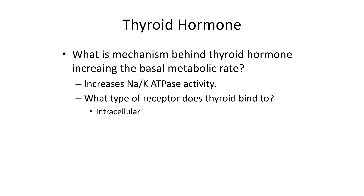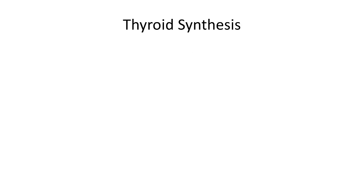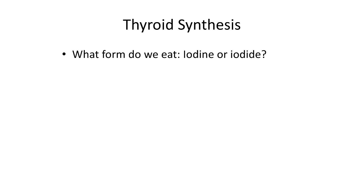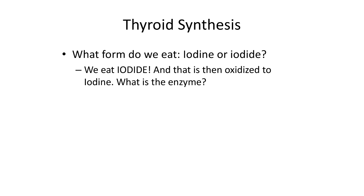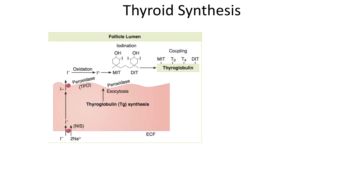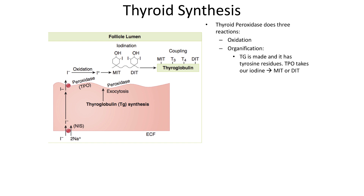Thyroid synthesis: we eat iodide, which is then oxidized — it loses an electron — to iodine. Thyroid peroxidase is responsible for this oxidation step. Thyroid peroxidase also performs organification, which involves putting the iodine onto thyroglobulin.